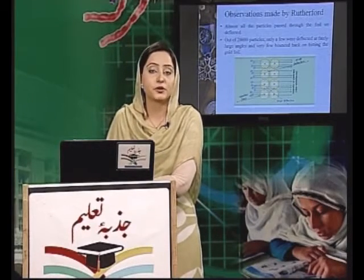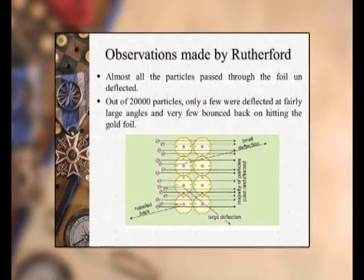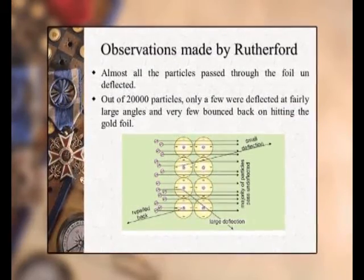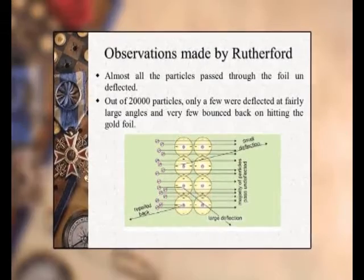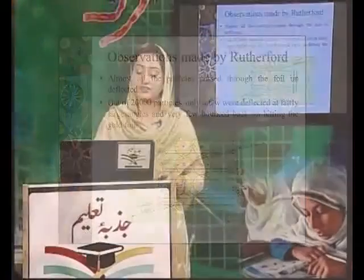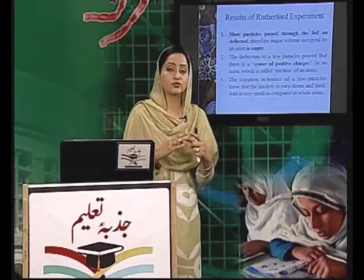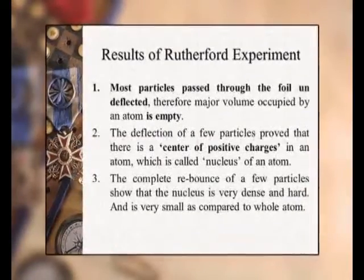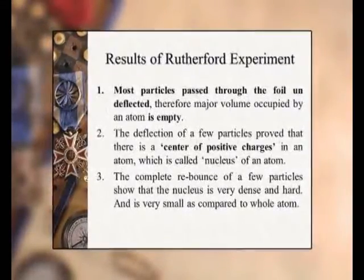Gold foil experiment کے بعد Rutherford نے جو observations دیے وہ کچھ اس طرح تھے: انہوں نے کہا کہ جتنے بھی particles تھے وہ سارے کے سارے foil میں سے pass کر گئے۔ لیکن انہوں نے کہا کہ out of 2000 particles بہت تھوڑے ایسے particle ہیں جو right angle پر یا کوئی angle بنا کر جا رہے ہیں یا ٹکرا کر واپس آ رہے ہیں۔ اس سے انہوں نے یہ conclude کیا کہ چونکہ زیادہ تر particles foil کو cross کر گئے اس لیے atom کا major portion خالی ہے۔ اور جہاں جہاں deflection ہوئی اس کا مطلب ہے کہ center میں کوئی positive charge ہے، جسے انہوں نے nucleus کا نام دیا۔